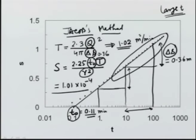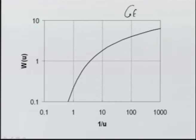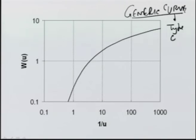Jacob's method will not work if the experiment is not carried out for a long time and data is not available for very large time — the straight-line portion must be available for Jacob's method to be applicable. Therefore, what we mostly do is use the type curve matching method, in which we prepare a generic plot — this is the type curve — which plots 1/u versus W(u).